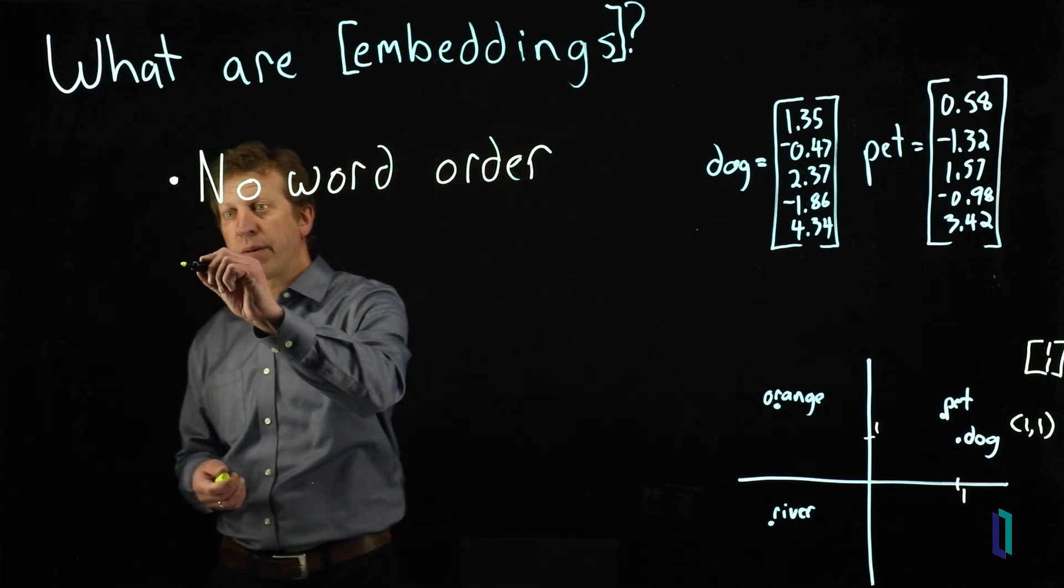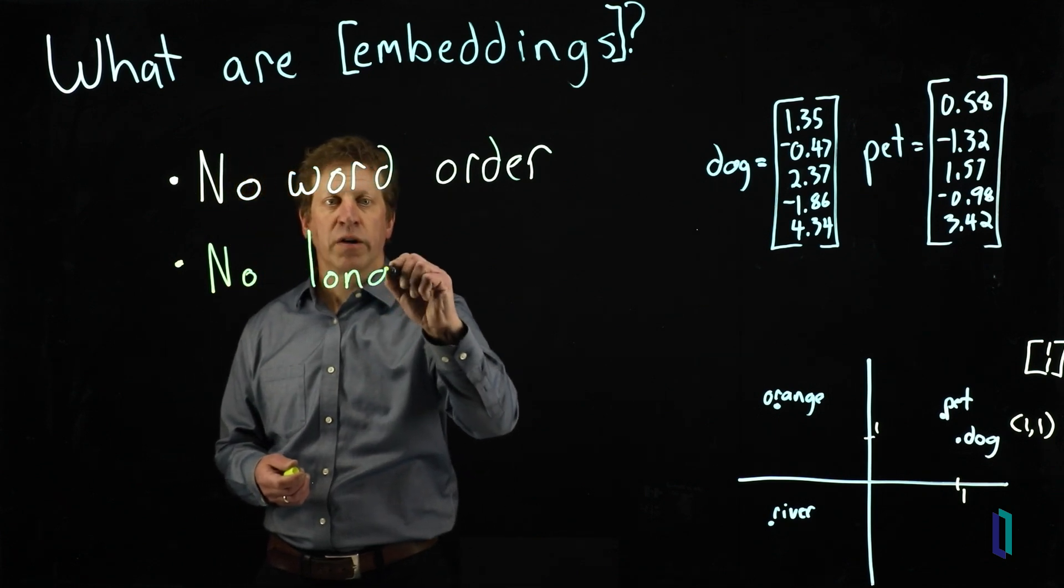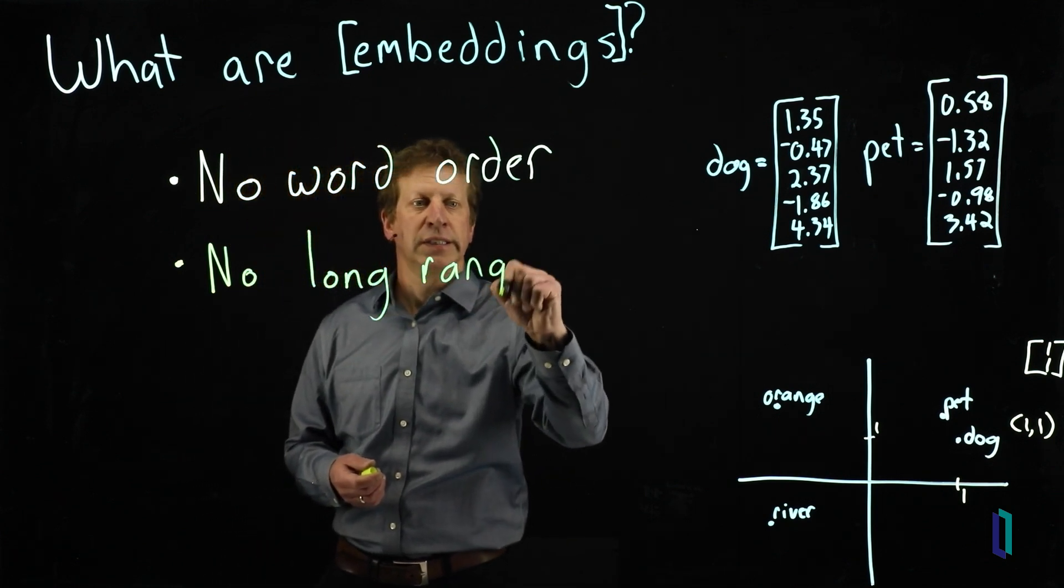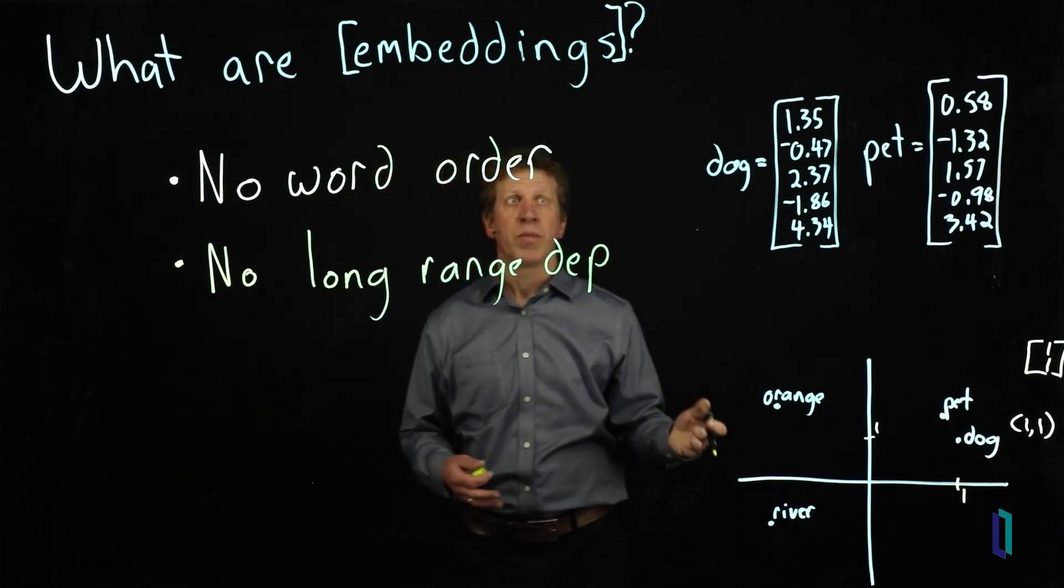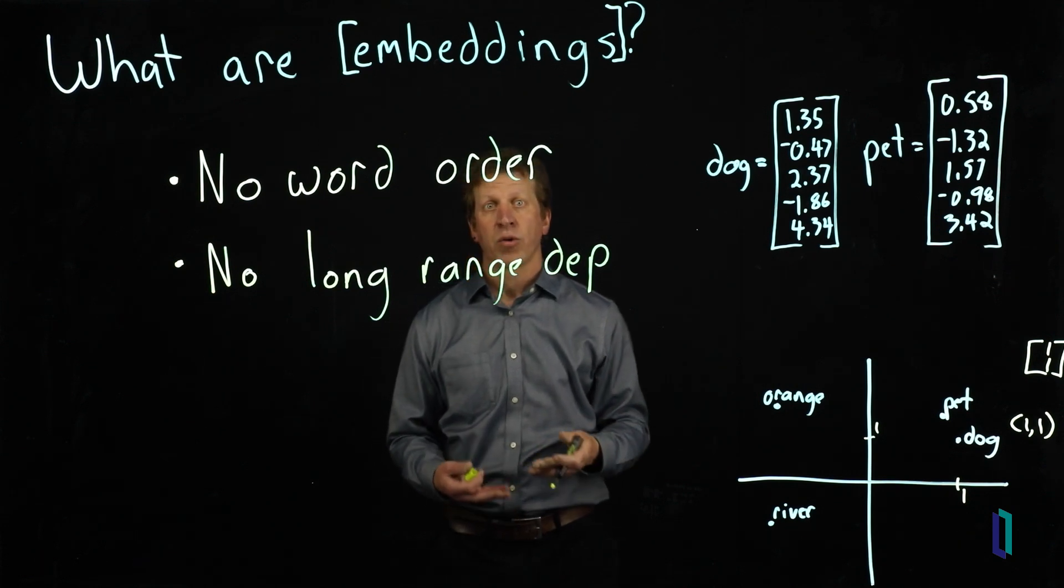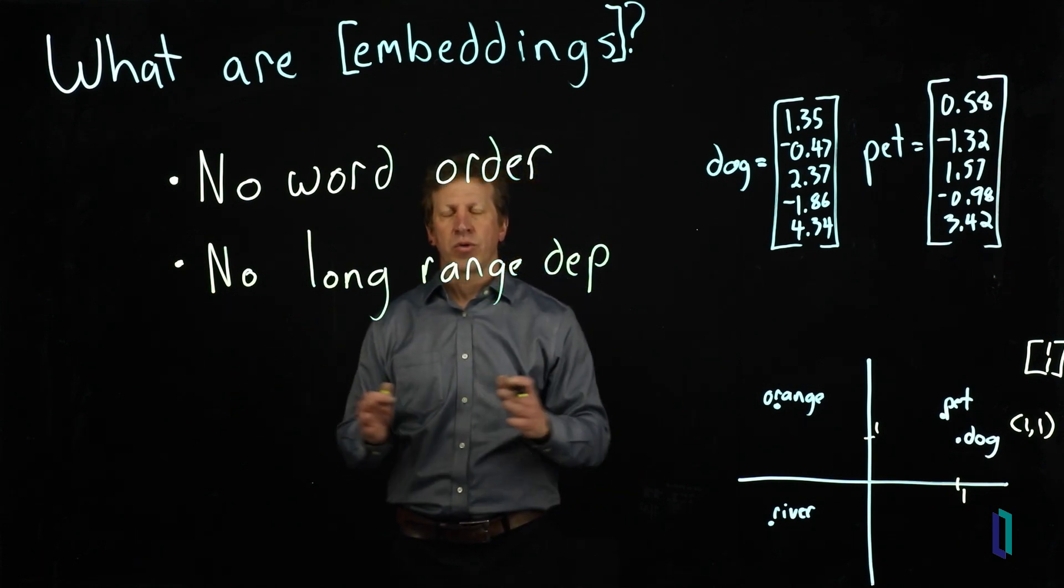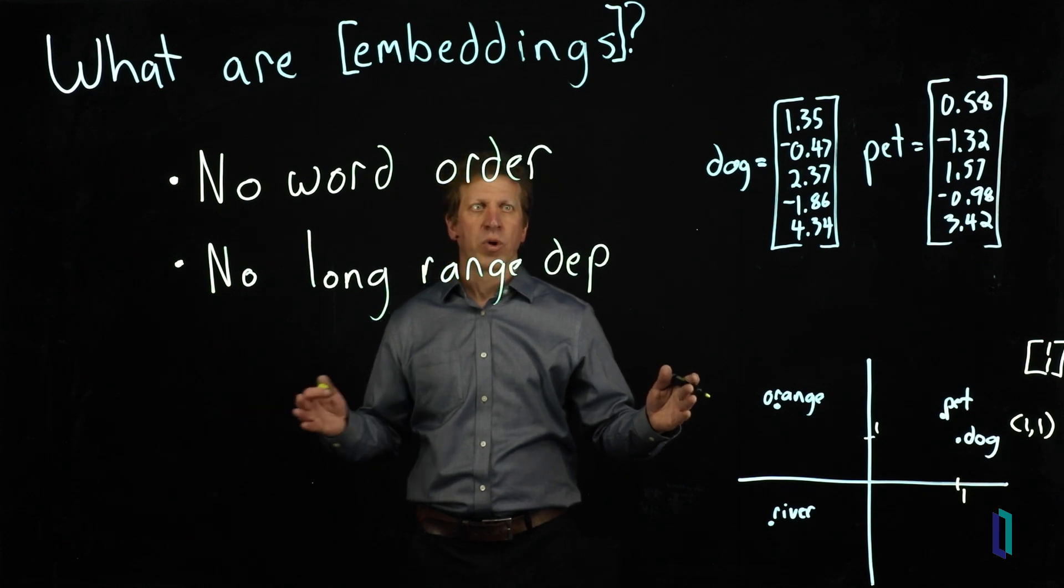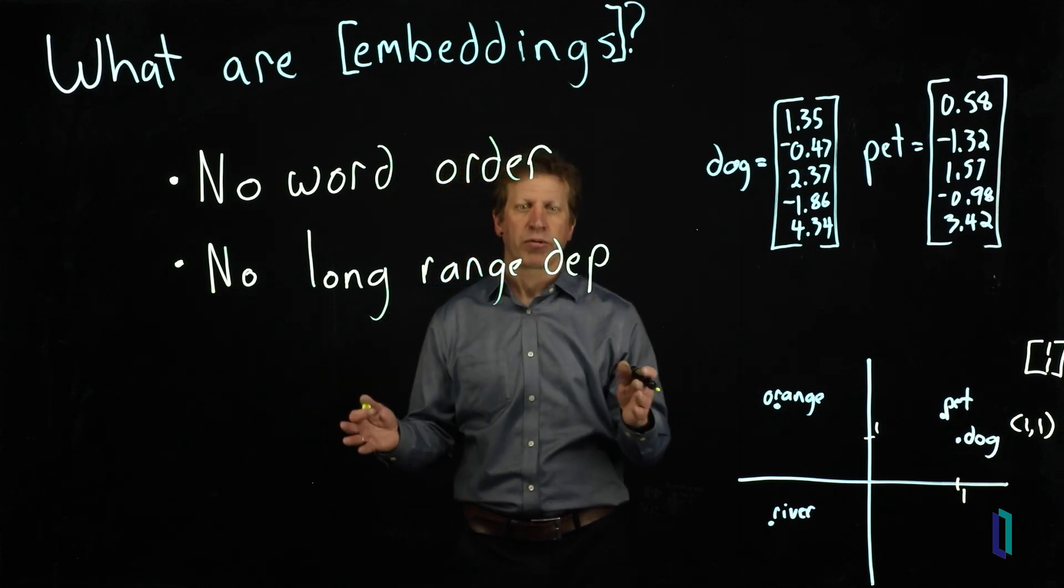Another very important thing is no long-range dependencies. You can imagine sometimes you might use a word and then refer to that word via a pronoun or other thing in sentences or pages away from this. You can only open the window of words that Word2Vec is using so much, and you'll never capture these long-range dependencies.